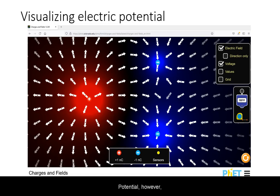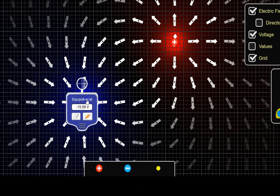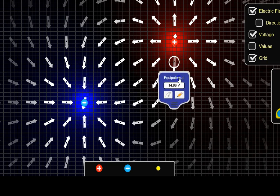Potential, however, is a scalar. Hence it only cares about the initial height versus the final height. It does not care about the path, just the initial and final potential surfaces.